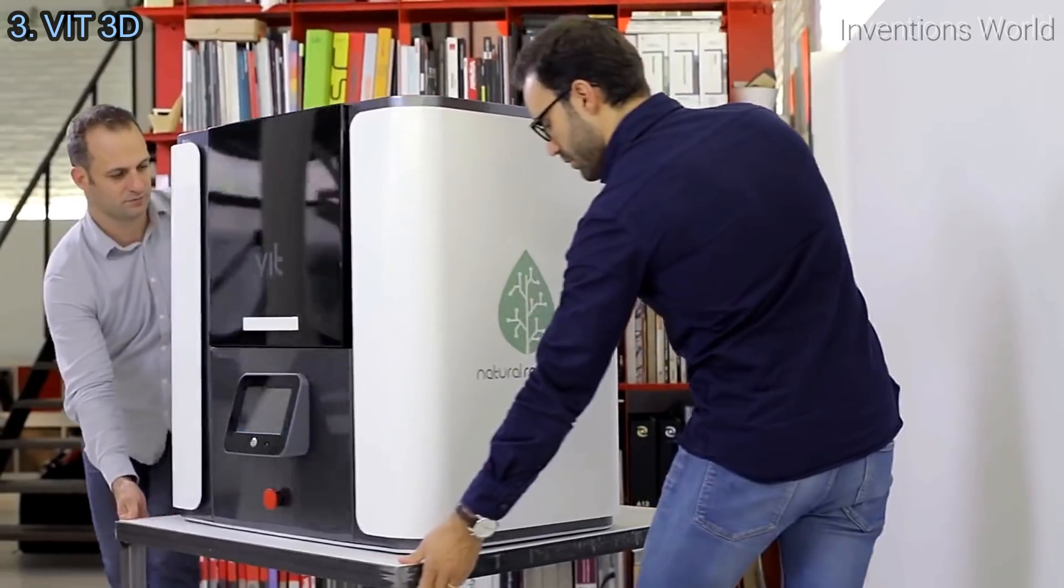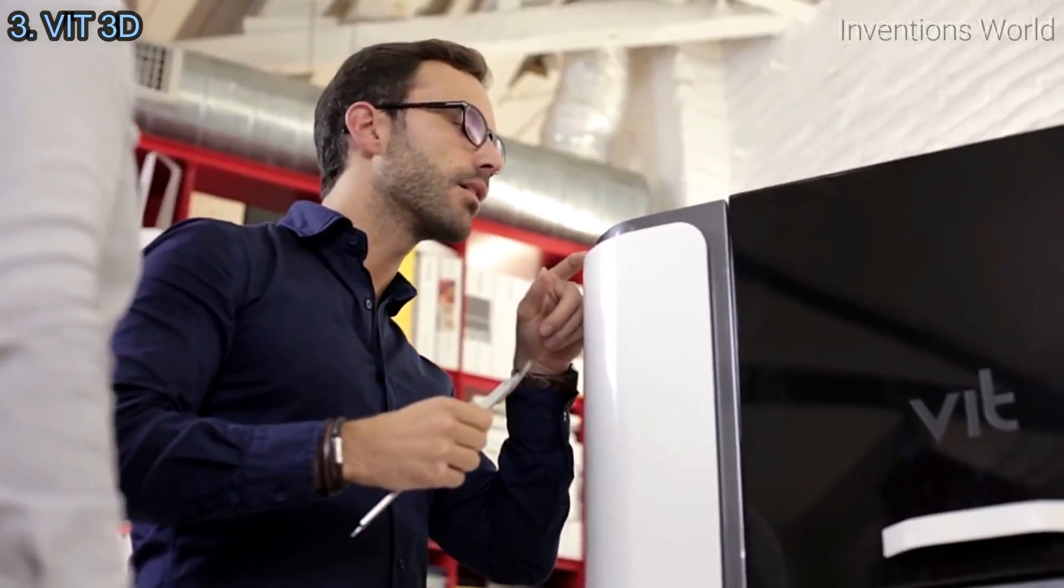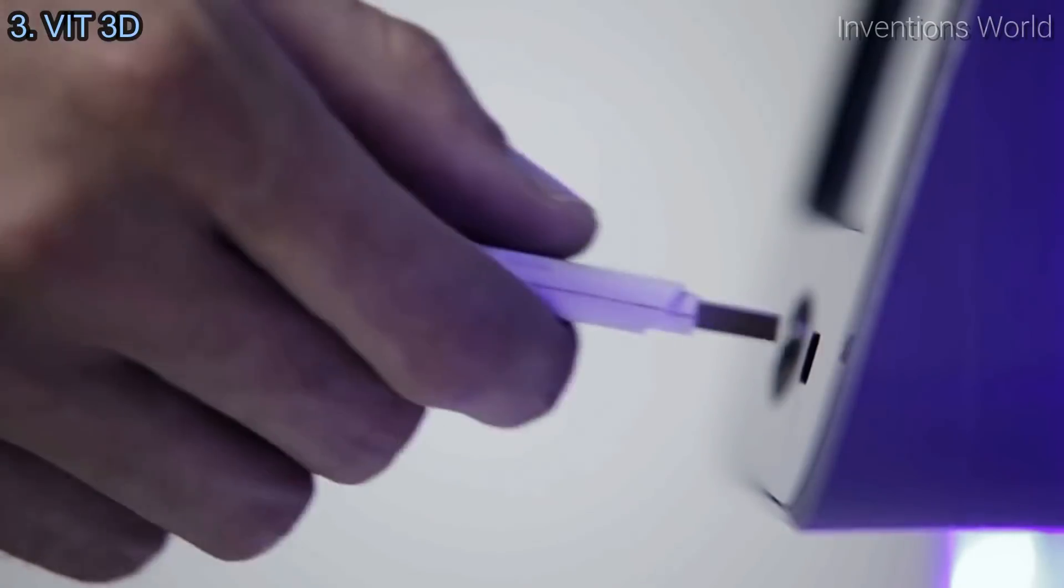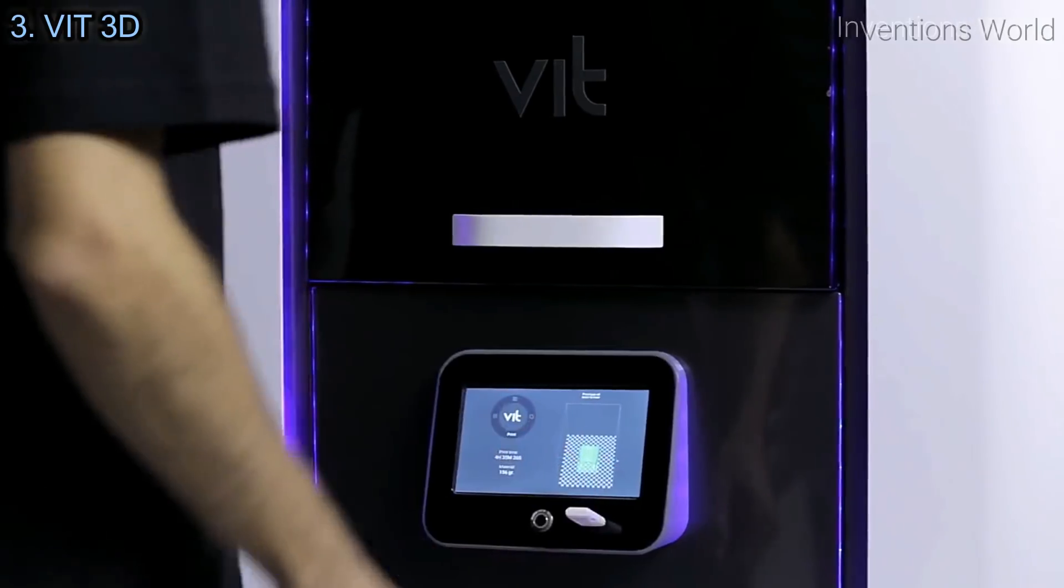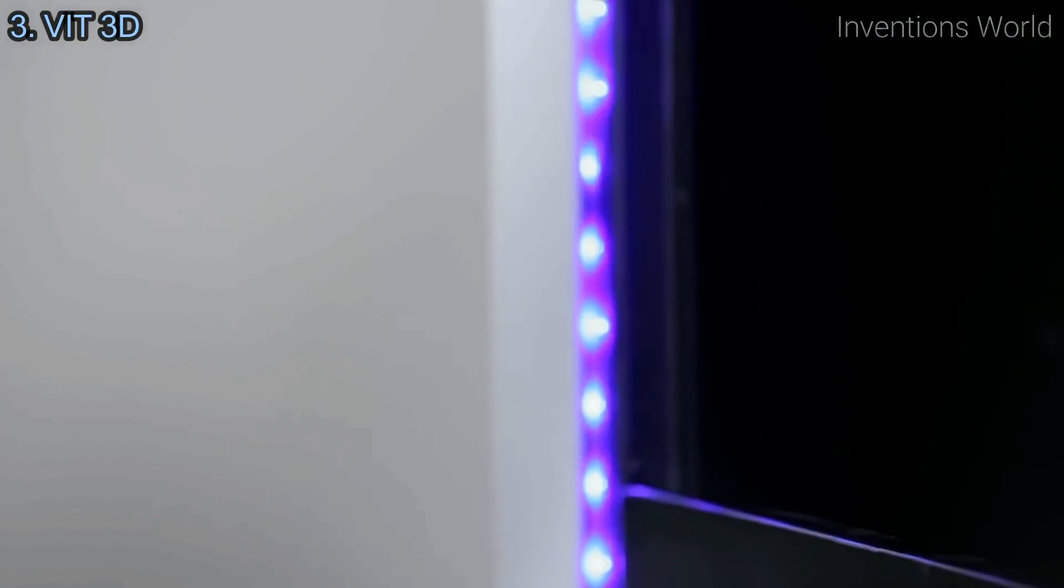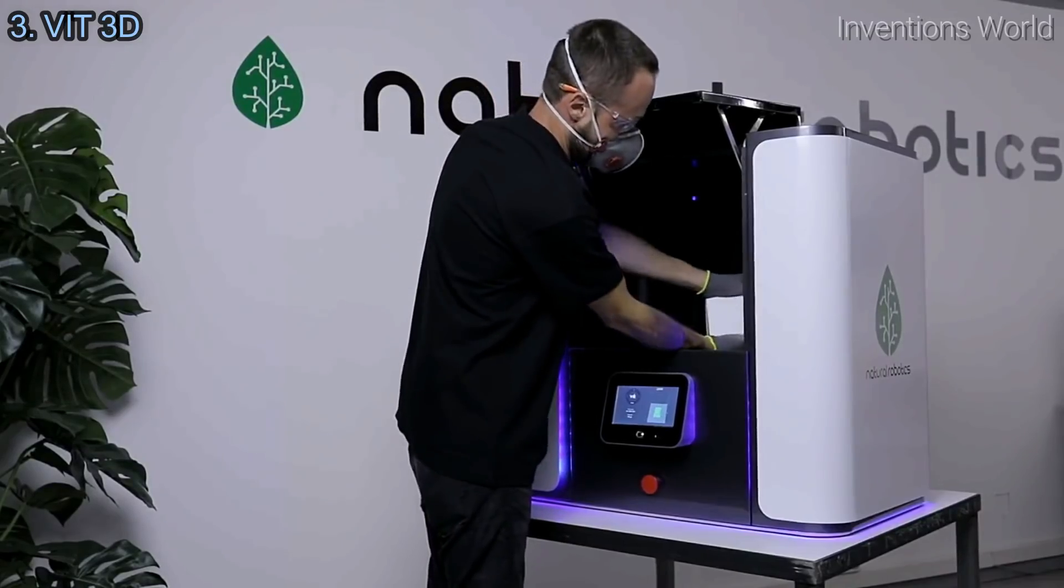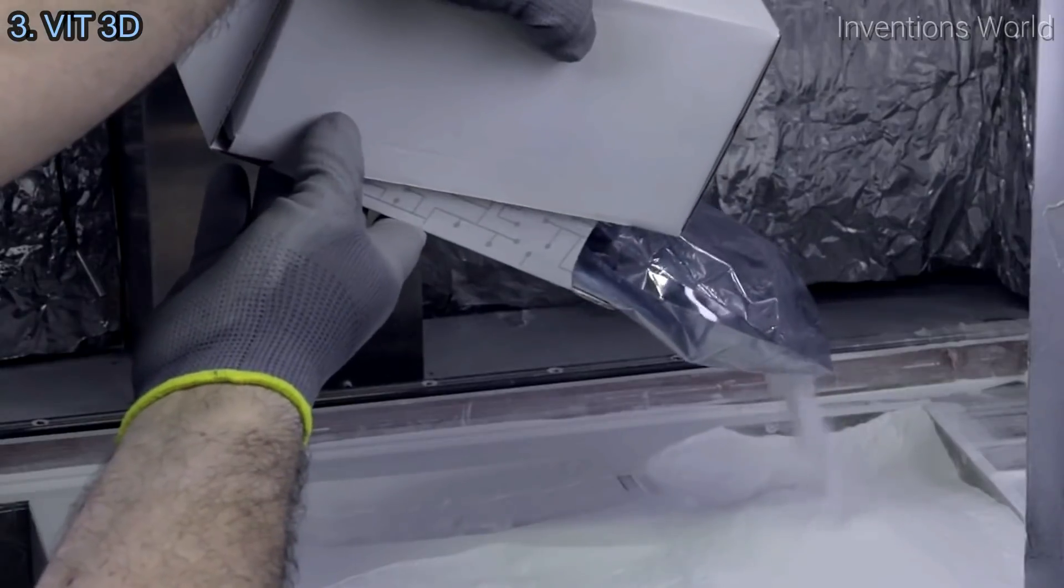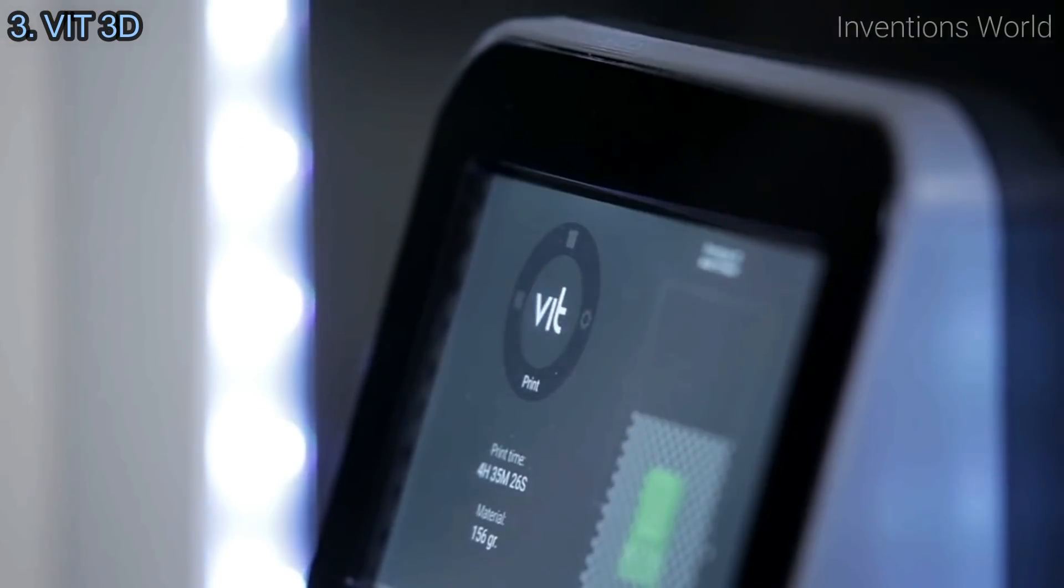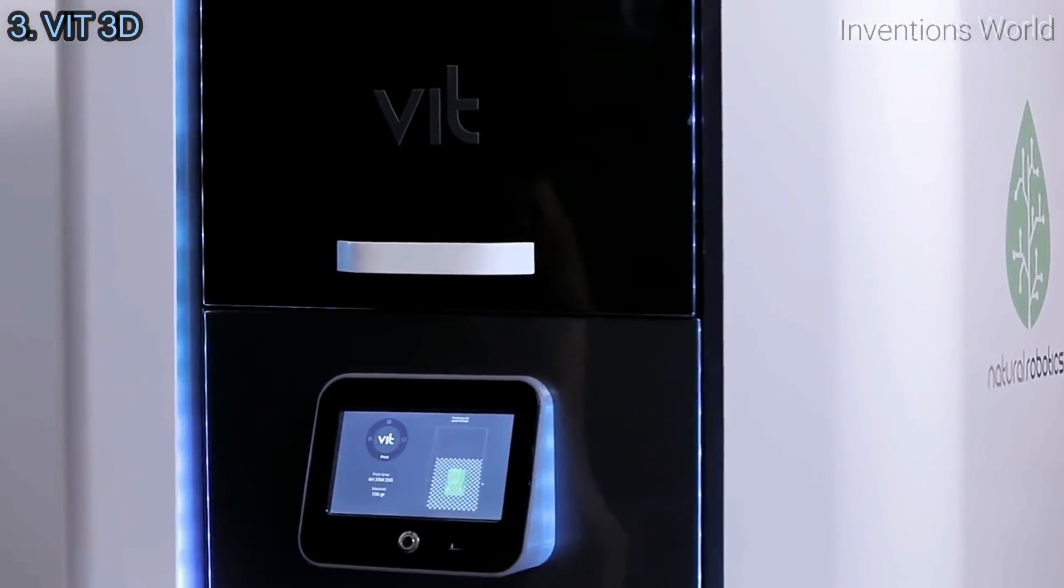Together, we have created a 3D printer with exceptional characteristics. The VIT SLS is open materials. It can work with various kinds of powder according to the needs of each piece. You just add the powder to the machine and press the on button.